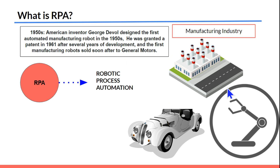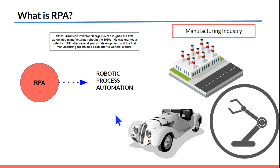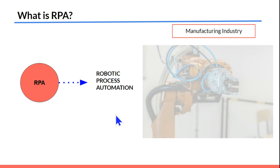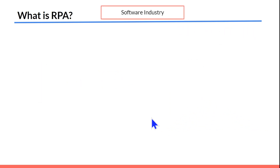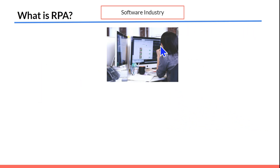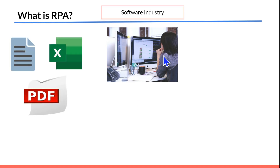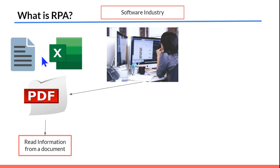Physical robots became quite popular in the manufacturing industry, but the same thing was not popular in the software or IT industry. Let's understand what I am talking about in the software industry. Let's see the daily work life of an employee — say the employee is an HR employee and she is getting multiple different documents.